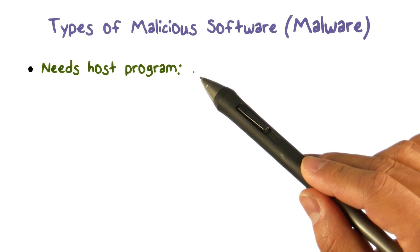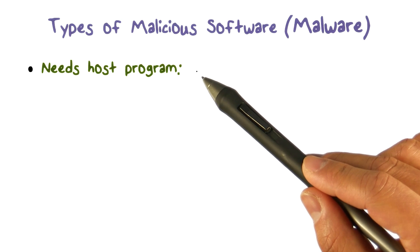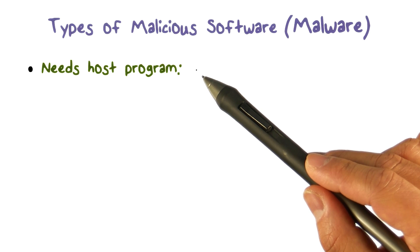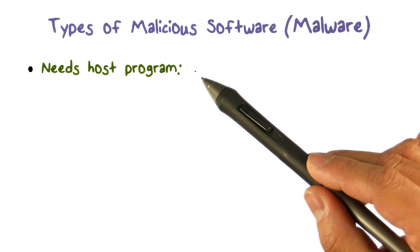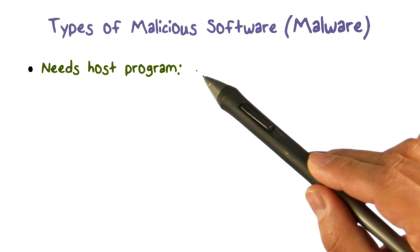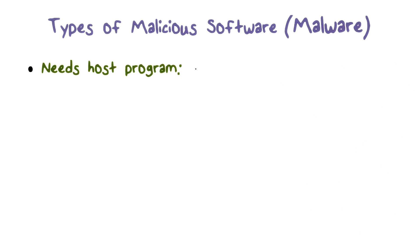When we say a malware needs a host program, we mean that the malware is embedded in an existing program so that it can enter a program, run on the system, and then spread from there. There are several ways for malware to embed itself into a program.